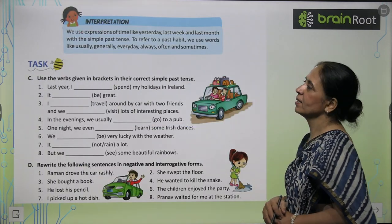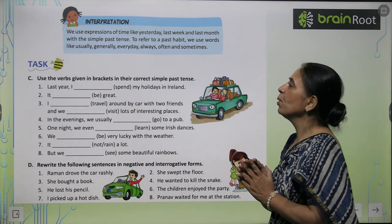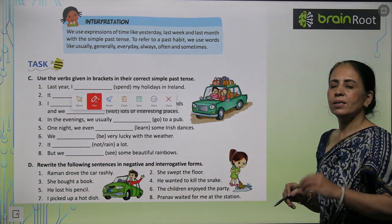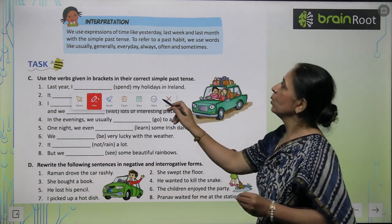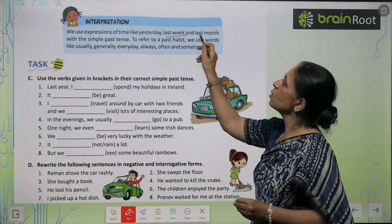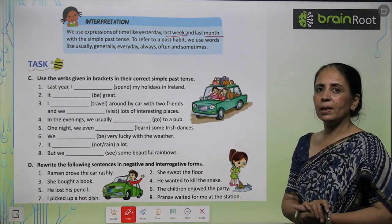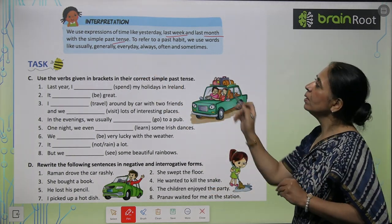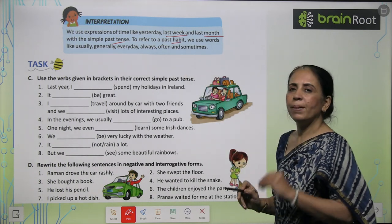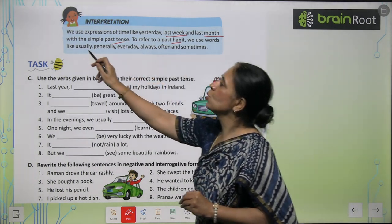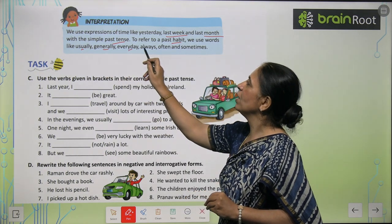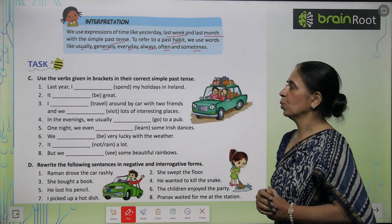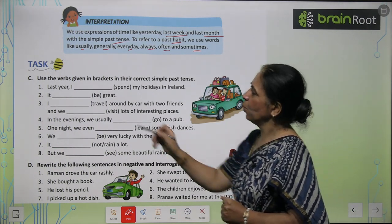Remember, we use expressions of time like yesterday, day before yesterday, last week, last month — these refer to time that has already passed, so we use past tense. To refer to past habits, words like usually, generally, everyday, always, often, and sometimes are used.